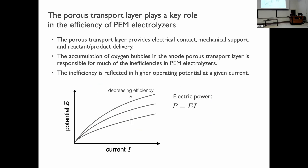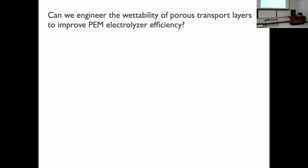We can quantify inefficiency by plotting potential as a function of current — higher operating potential at a given current reflects inefficiency. Since power is the product of potential and current, reducing potential reduces operating power. The question we asked ourselves was: can we engineer the wettability of these porous transport layers to improve the efficiency of PEM electrolyzers?